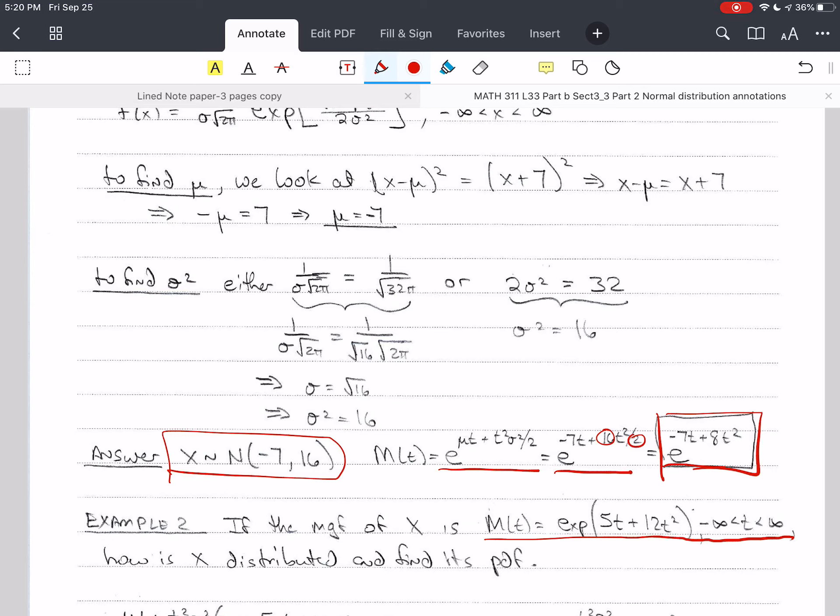So we want to know how is x distributed, and then we'll find its PDF. So here, I look at this and I say, let me write down the moment generating function for the normal. This looks like a normal. So exp mu t plus t squared sigma squared over 2. And so we use a theorem from algebra that says, if I have a x squared plus b x plus c equals 7x squared plus 3x minus 4, then I can just look at the coefficients with the same powers, and these coefficients have to be equal.